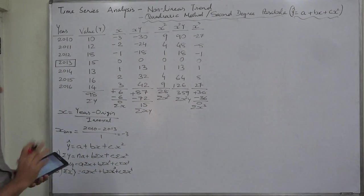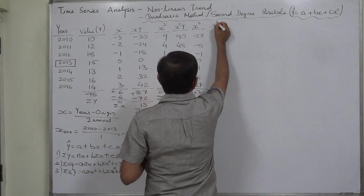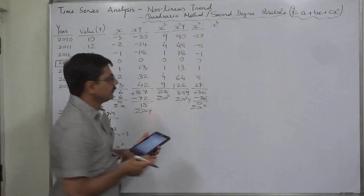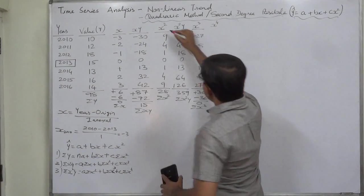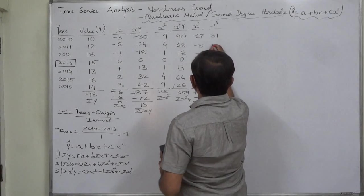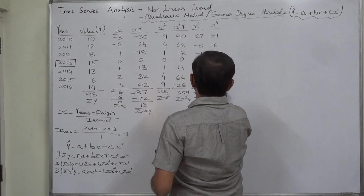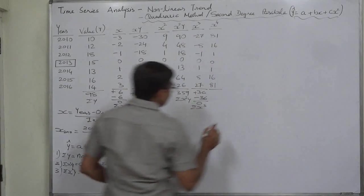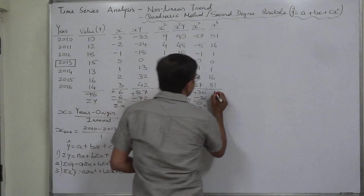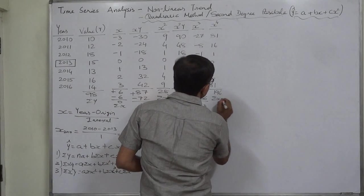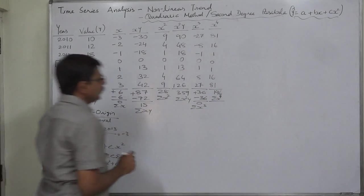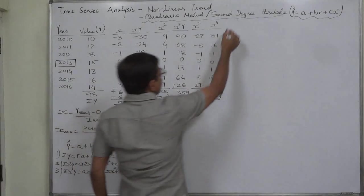Now the last column: x raised to 4. Because of this column the method is also known as the quadratic method. x raised to 4 is the square of x squared: 9 squared is 81; 4 squared is 16; 1 squared is 1; 0; 1; 16; and 81. The total is 81 plus 16 is 97, plus 1 is 98, plus 98 is 196. So sigma x raised to 4 equals 196. Now we have all the columns we need.